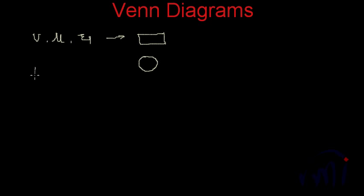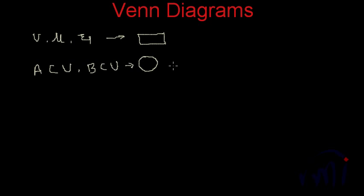So suppose if we have a set A which is a subset of the universal set, and if we have a set B which is also a subset of the universal set, both of these sets will be represented as circles. We have to draw different, separate circles to represent both sets.